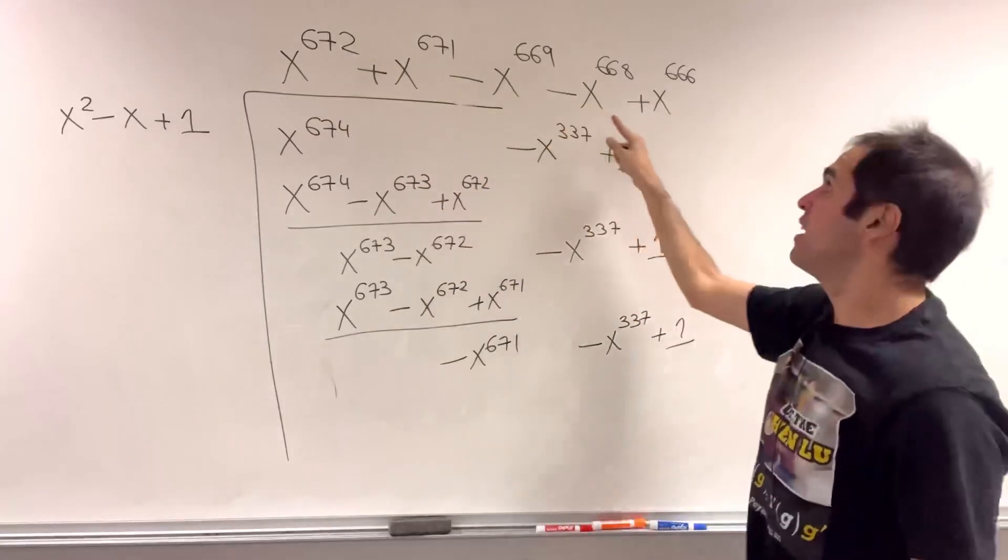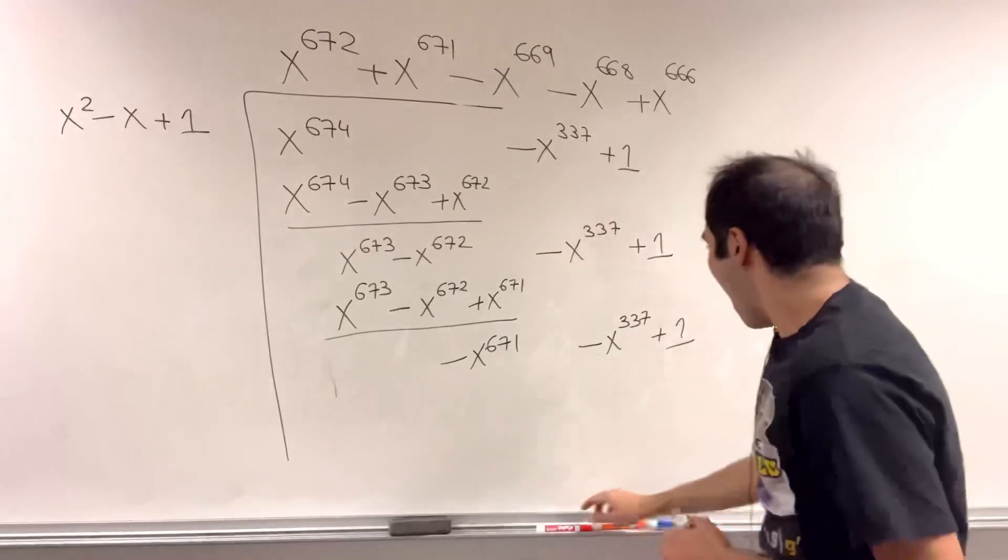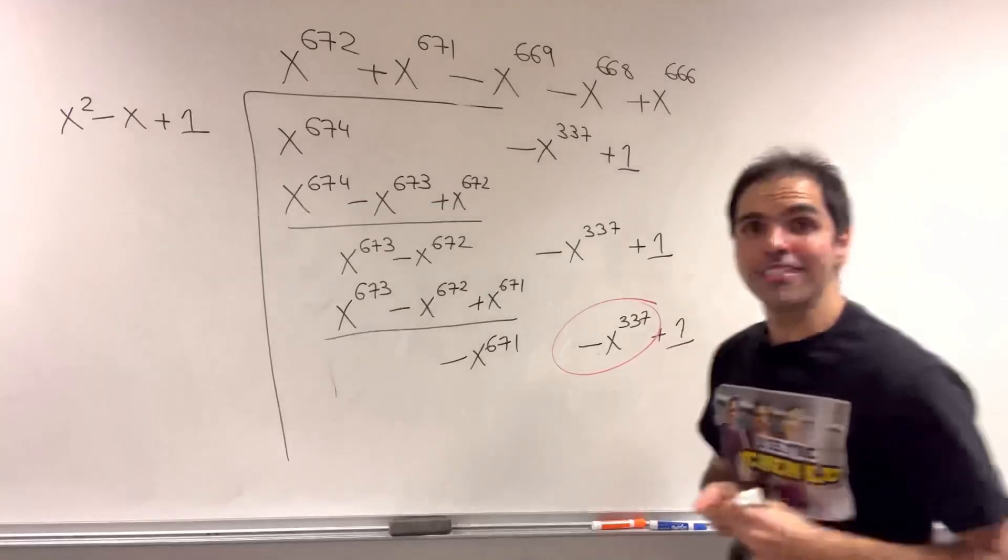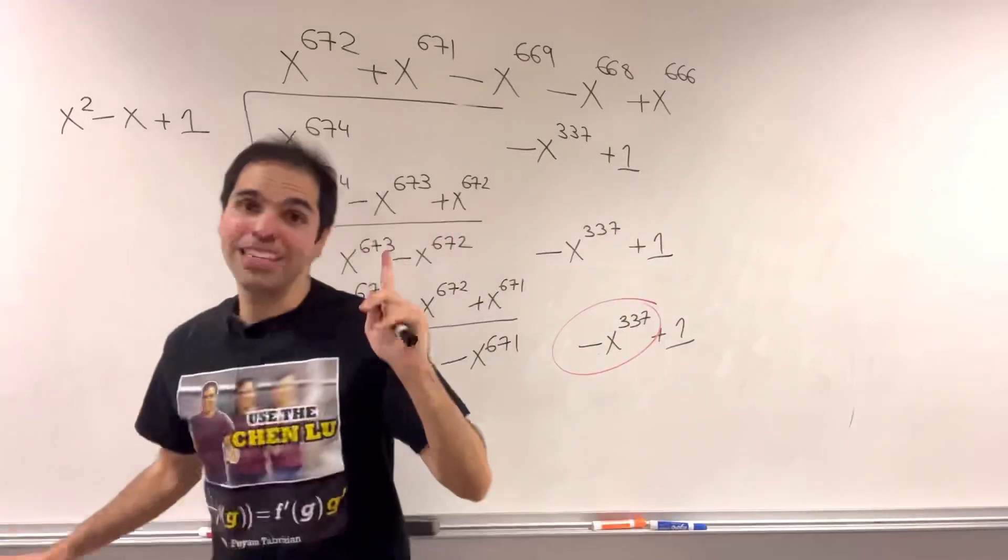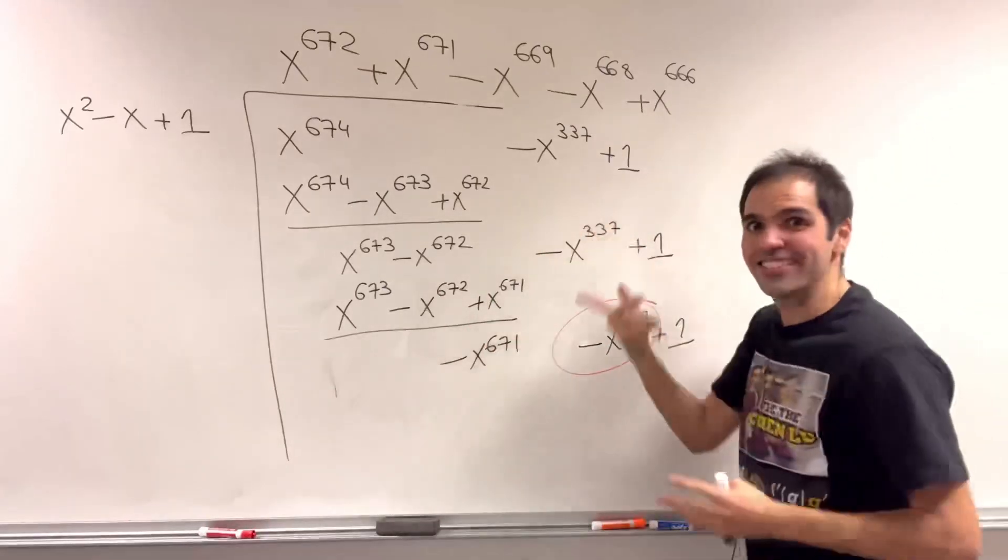So you see, we have plus plus, minus minus, plus plus, minus minus, until, turns out, you reach 337, at which place there's a switch. Not Nintendo Switch, but there's a switch in signs.